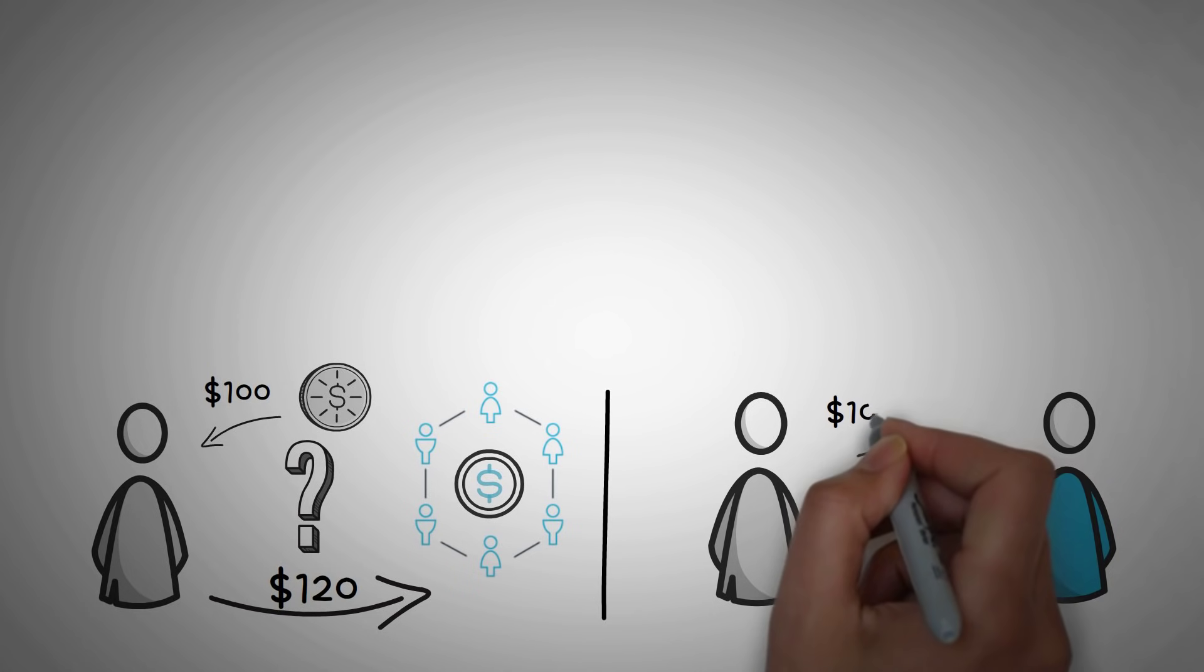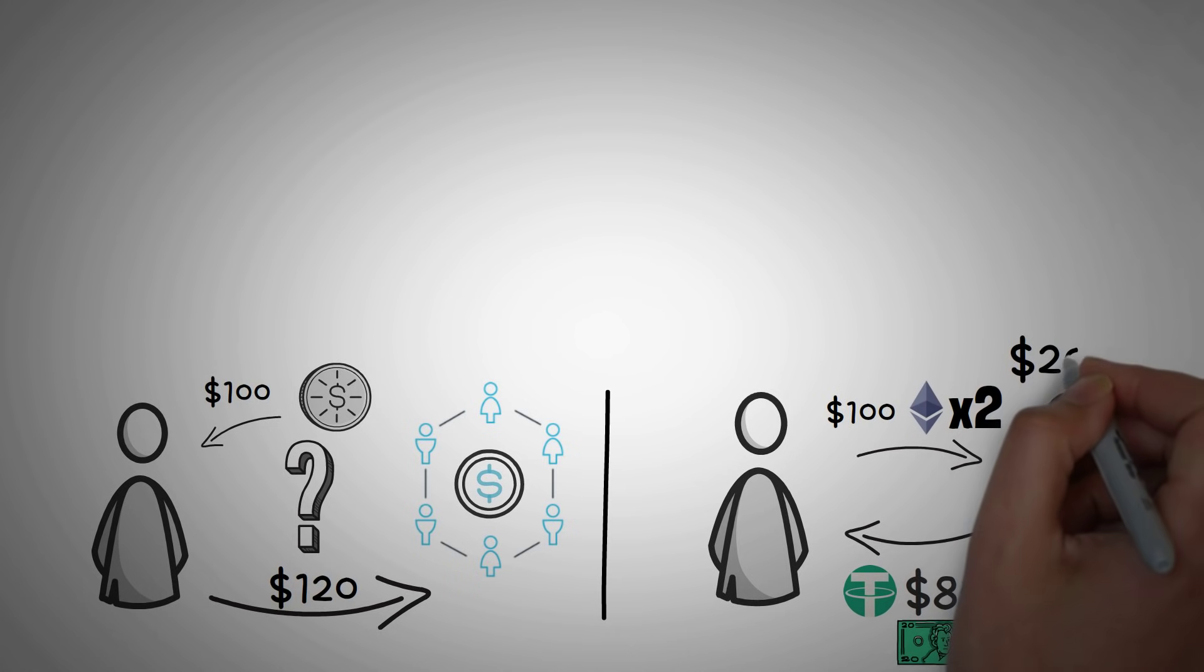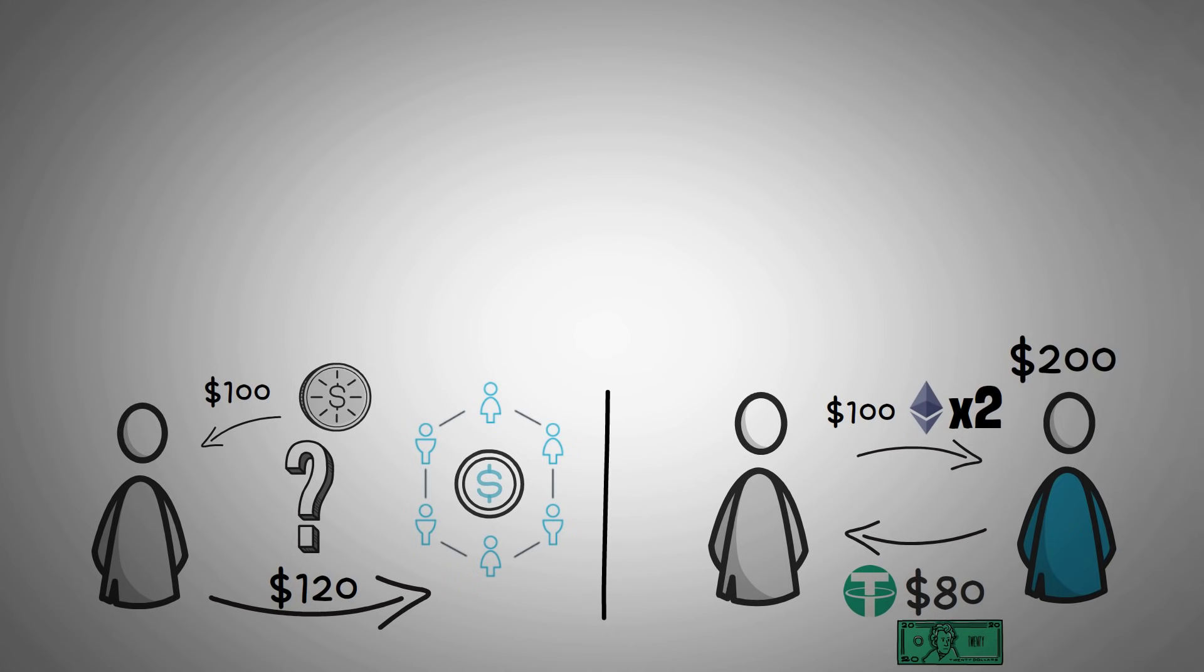Well, imagine this. If I gave you a hundred dollars worth of Ethereum, and you lent me eighty dollars worth of Tether, which is a stablecoin pegged to the US dollar. You'd use that eighty dollars for a few months, and then you decide to pay it back and get your ETH. Well, by then, Ethereum has doubled in price, and so you cash out your hundred dollars of Ethereum, but you actually get two hundred dollars worth of value because Ethereum raised in price.